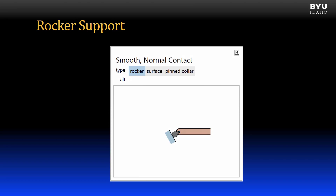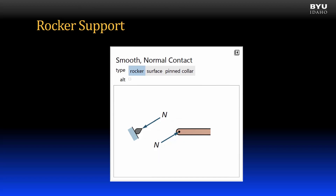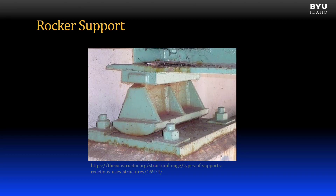We get the same support reaction for a rocker support. The reaction force is a push normal to the surface. The end of the body is free to rotate, so there is no moment reaction from a rocker. Here is an example of an actual rocker support on a bridge. Its purpose is to hold up the structure vertically, but to also allow some horizontal movement from thermal expansion and contraction of the structure.